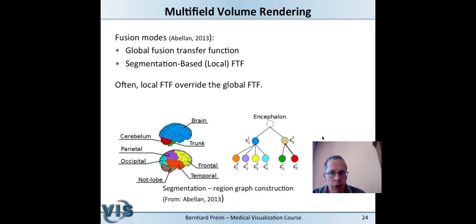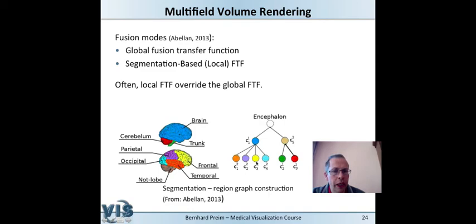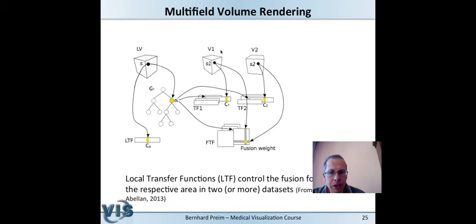Another approach uses a hierarchy of local fusion transfer functions, as described by a group in Spain. A tree structure corresponding to the brain and its lobes allows a transfer function to be defined at each level, which is finally integrated as a global fusion transfer function. Local transfer function controls the fusion process at a fine-grained level.